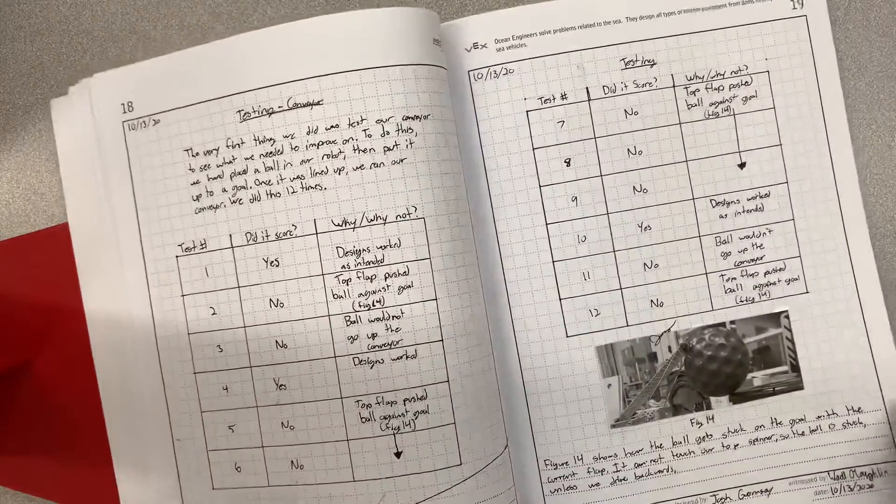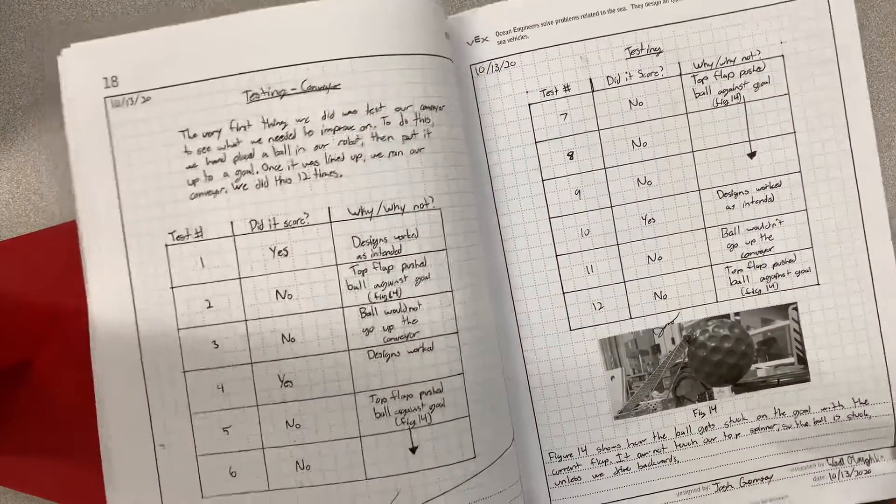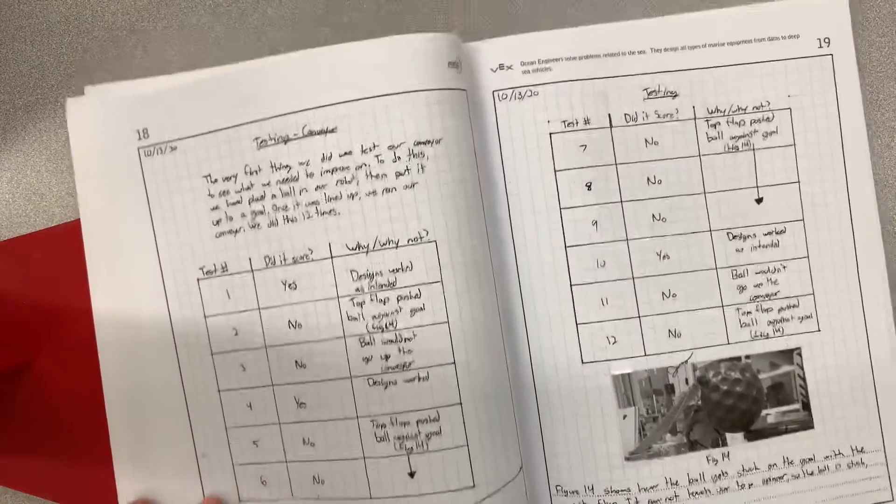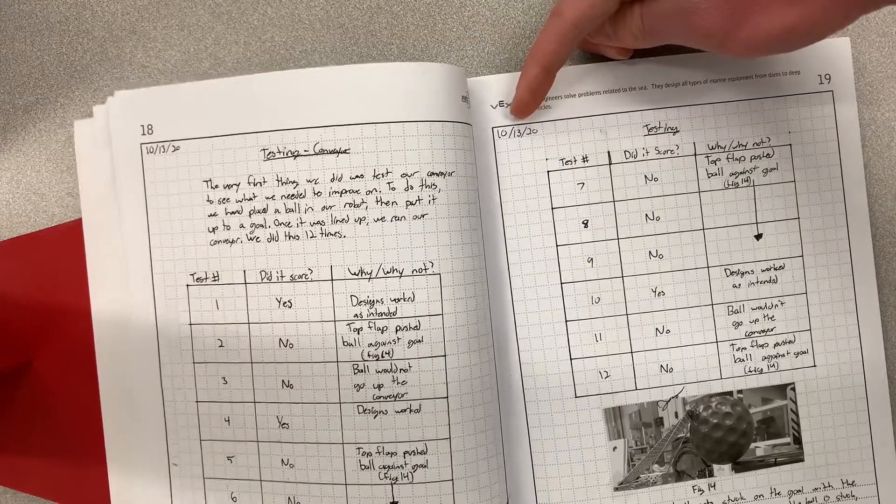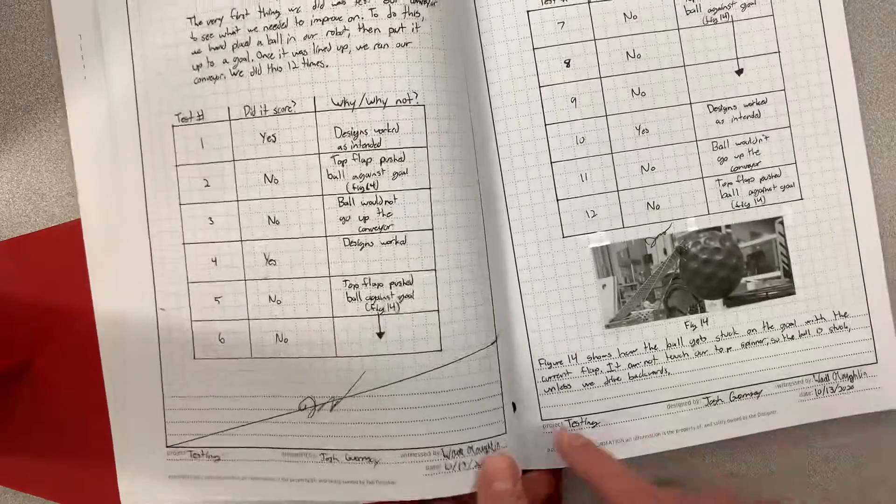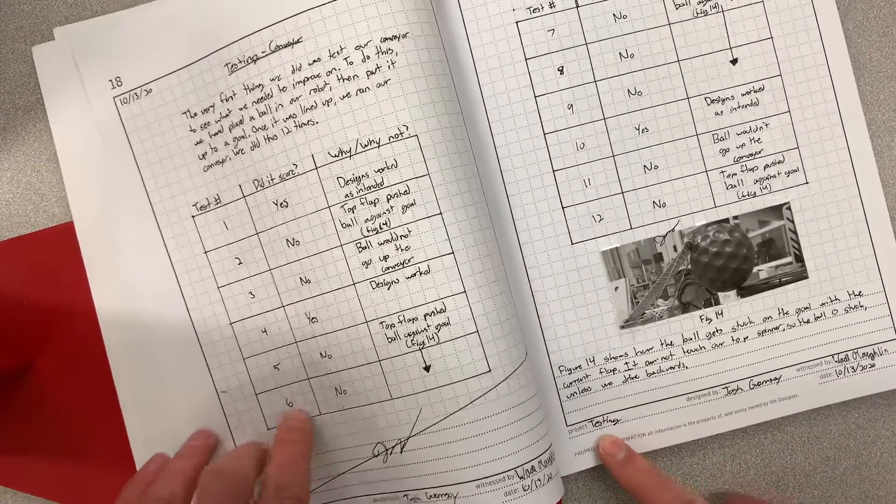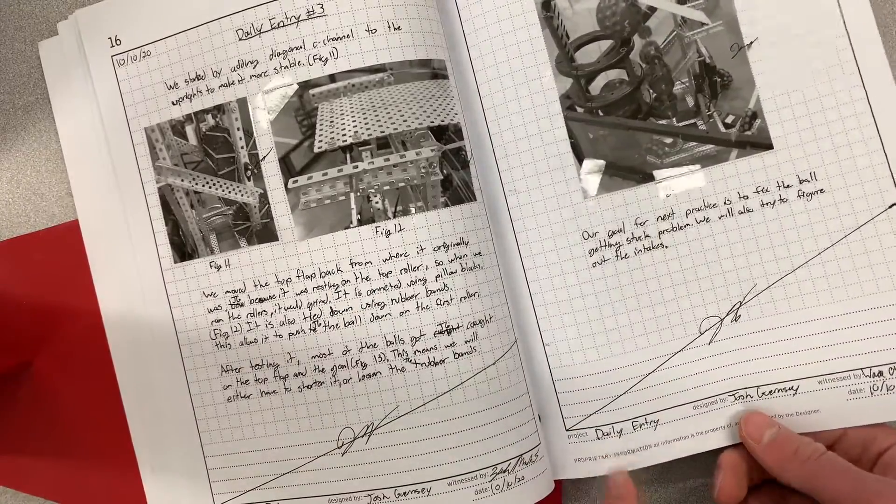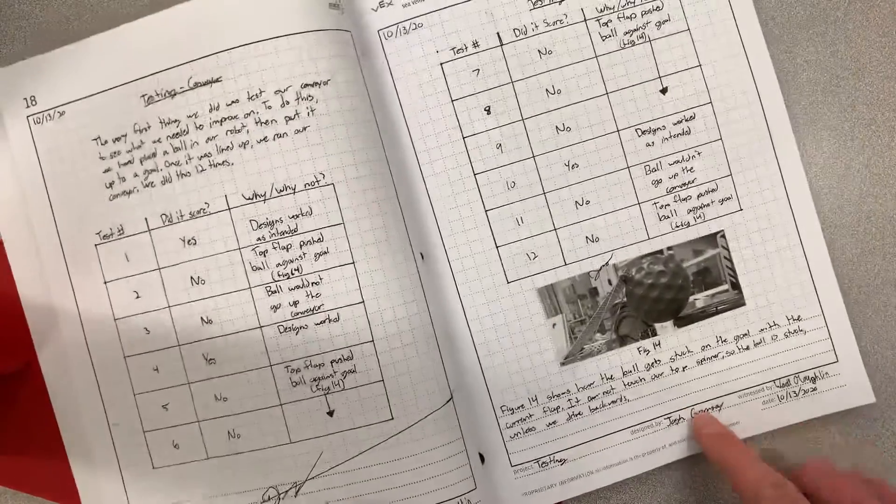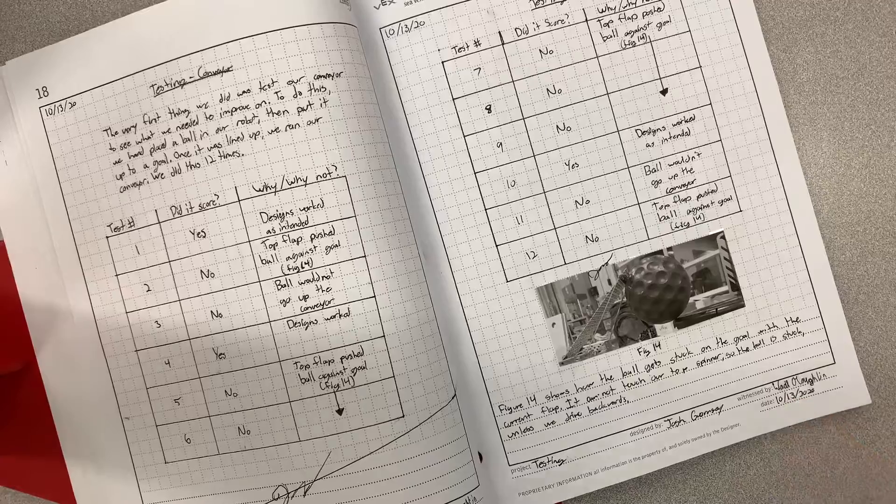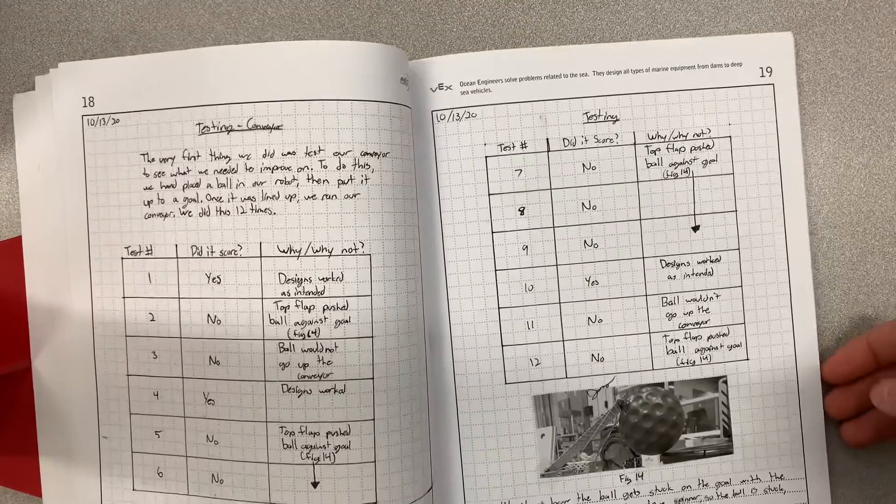Don't try and just cram everything onto one day because that looks not as good. And also at the top you want to date every single page and then at the bottom write down if it's testing, daily entry, coding, whatever it is. And then sign it and date it and have somebody else on your team sign it and date it after reading it as well.